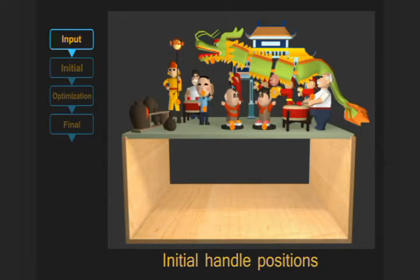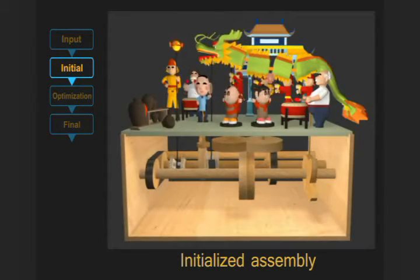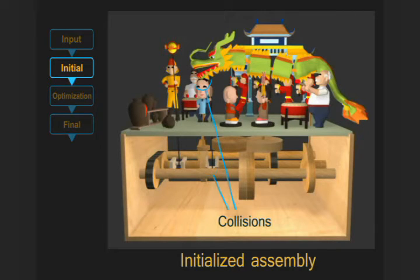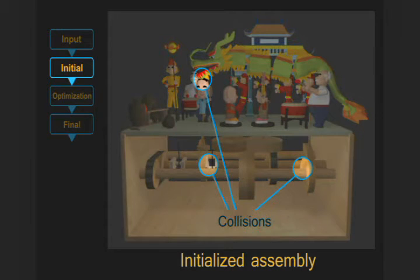The designer also specifies the initial position of handles where features connect to the mechanism. We initialize the assembly's driving axis and parts using a simple procedure that categorizes parts based on their rough motion.